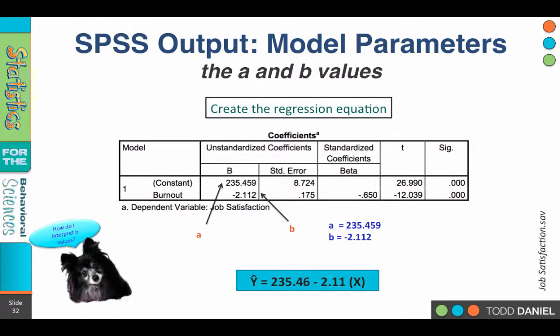Under the coefficients box, we can find the A and B values that we would need to plug into our linear regression equation. Now they'll both be under a box labeled B, so don't let that confuse you. Both A and B are in that same box. But remember, A is a constant. It is the value that is predicted for Y when X equals 0. So you'll find A listed as constant. Its value is 235.459. The B value is a negative 2.112. We'll round both of those, and here's what we'll say. Plugging in A and B to our regression equation formula, the regression equation for these data is Y prime equals 235.46 minus 2.11 times X.